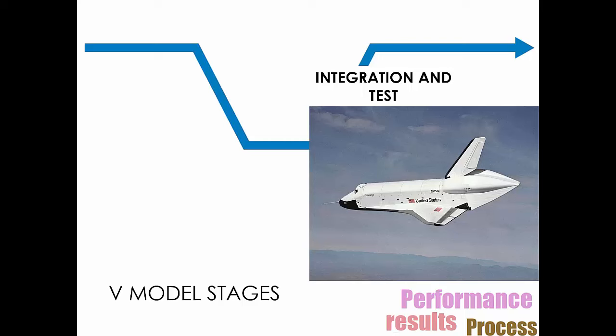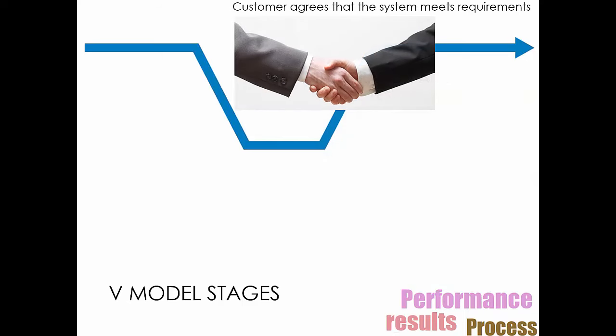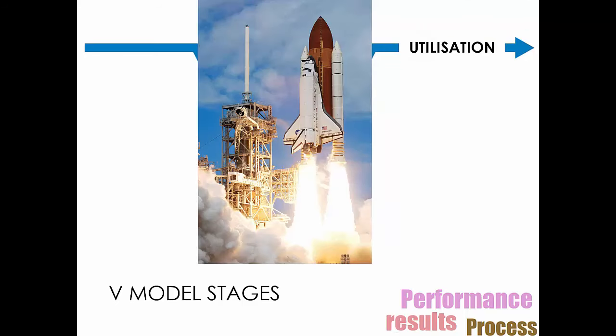So systems engineers are involved in all of these stages and help define what goes on. And at the end, you really want to make sure your customer is agreeing to what you've made. They're going to take it off your hands. So this is what you might call customer acceptance. And in the end, hopefully you've made a working space shuttle with your NASA and you use it. Great.